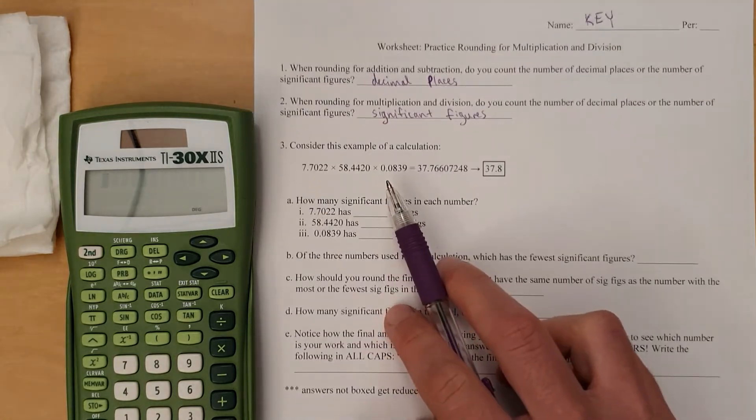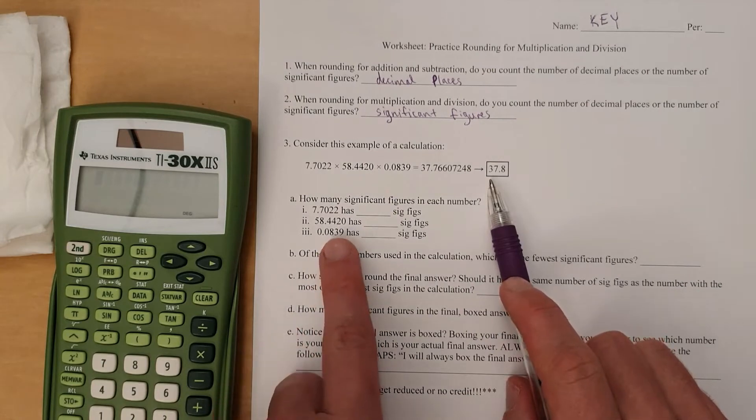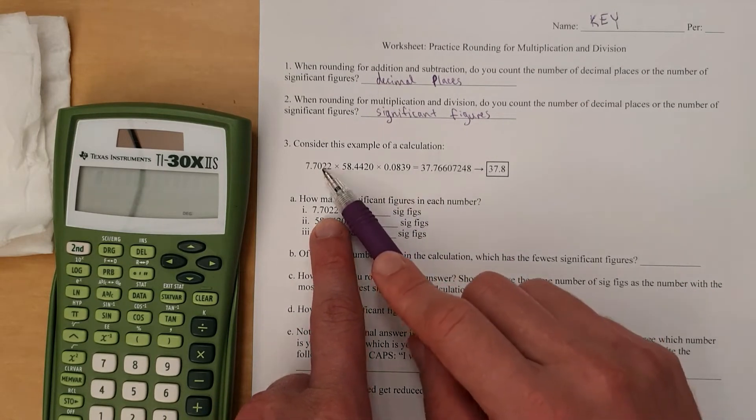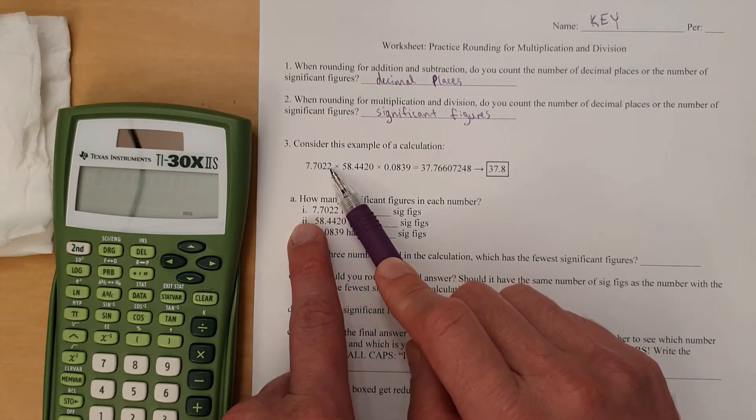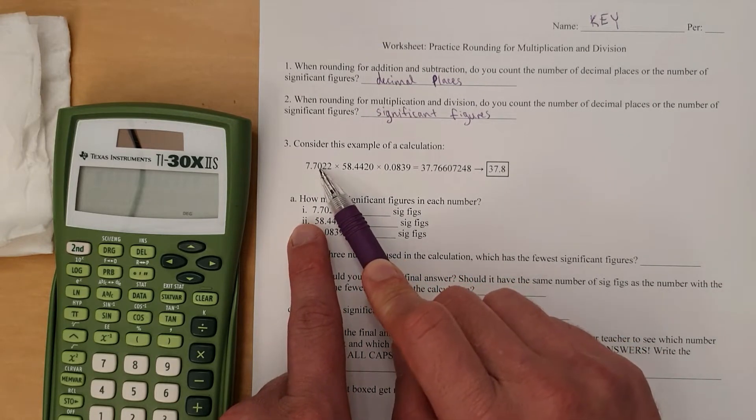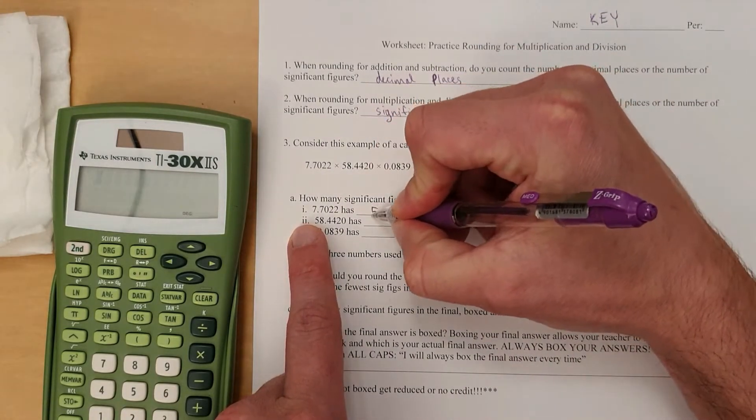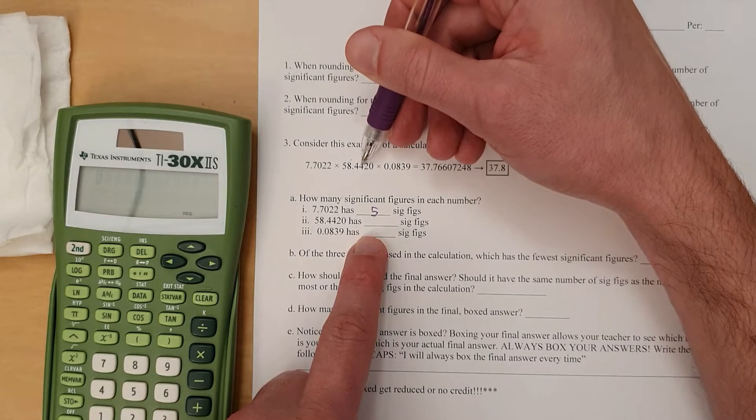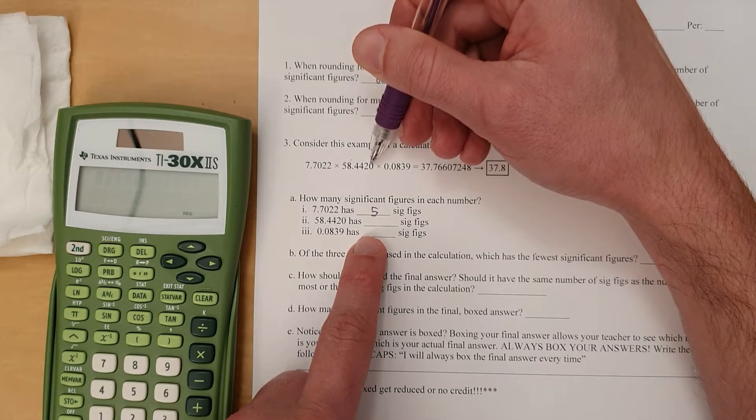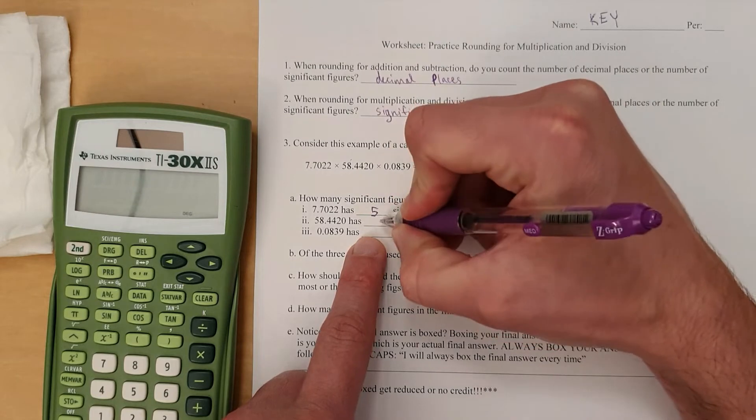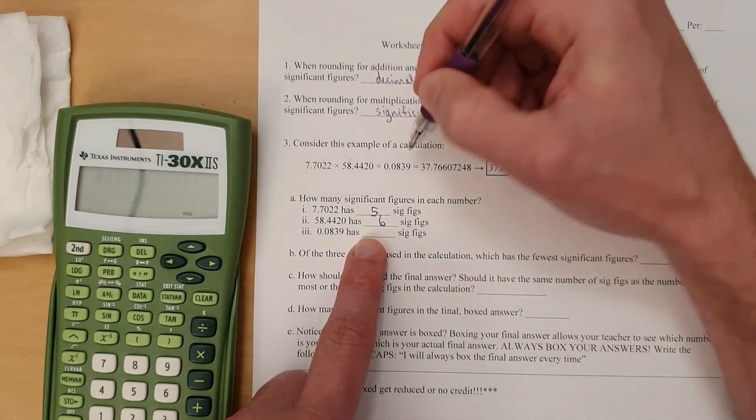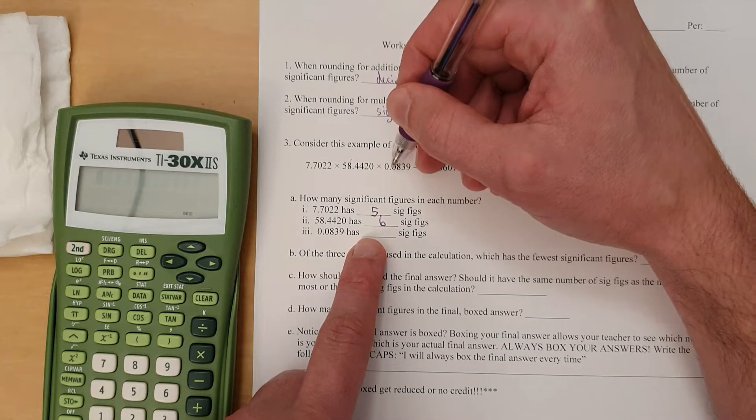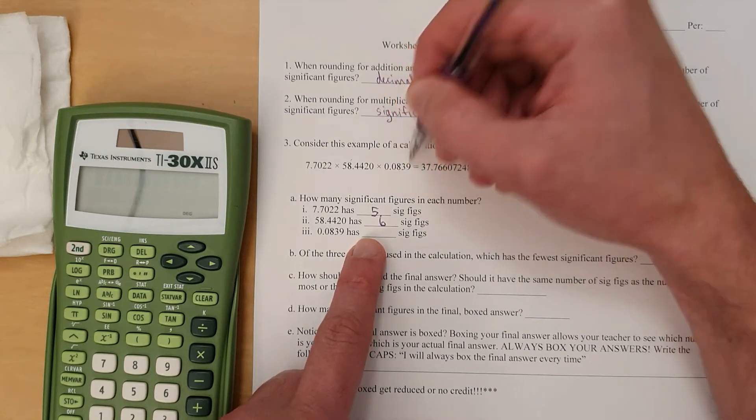So for this example, where you multiply these out to get this, you've got to count how many sig figs in each answer. So this number has 1, 2, 3, 4, 5 significant figures, because 0 counts as a sig fig if it's between non-zero numbers. So that's 5 sig figs. 1, 2, 3, 4, 5, 6 significant figures. Trailing 0s count when there's a decimal, so 6 significant figures. And this one, leading 0s don't count when you've got a decimal, or actually, just in general, leading 0s just don't count. So it's just 3 significant figures, just these right here.